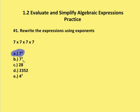It's not 7 to the seventh because that would be 7 times 7 times 7, seven times. It's not 2,352 because we're not asked to evaluate, just asked to rewrite.